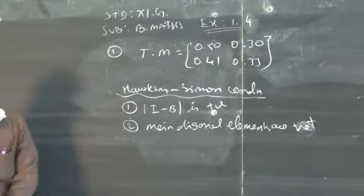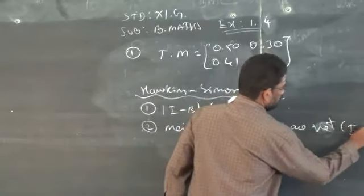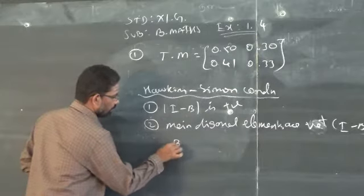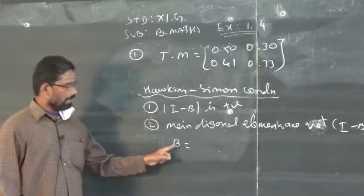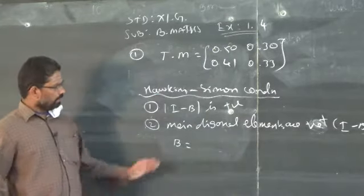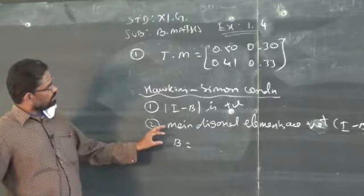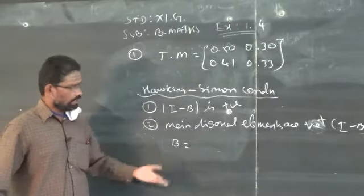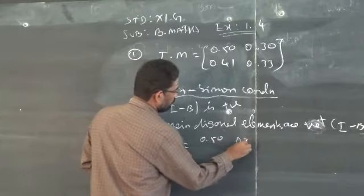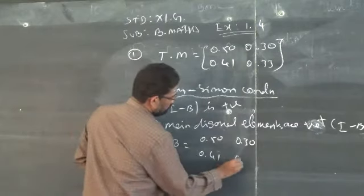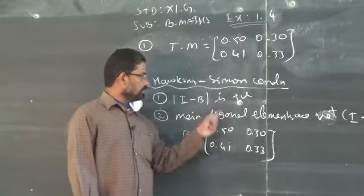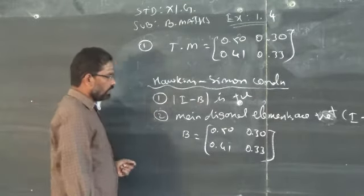Now we need to find I minus B. You have to take the technology matrix as capital B. I stands for the unit matrix. The order of the unit matrix depends on the question — here the given matrix is 2 by 2, so I must also be of order 2 by 2. Do not take a 3 by 3 unit matrix.